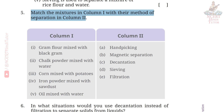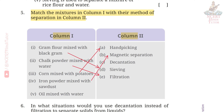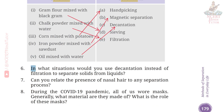Question 5: Match the mixtures in Column 1 with their method of separation in Column 2. First — gram flour mixed with black gram: (d) sieving. Second — chalk powder mixed with water: (e) filtration. Third — corn mixed with potatoes: (a) hand picking.